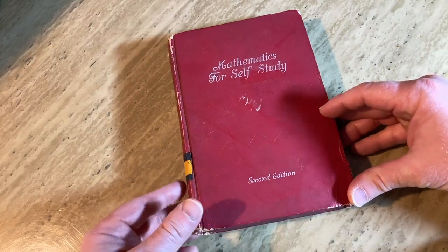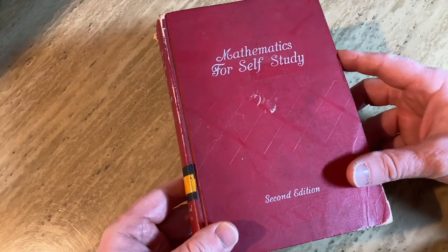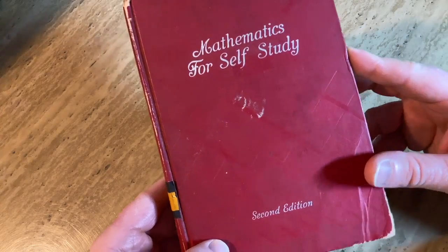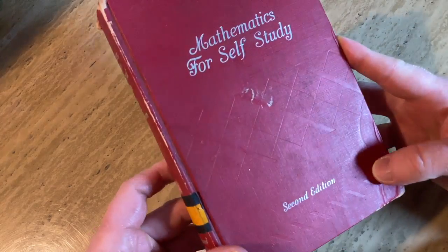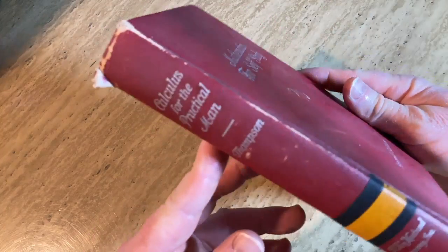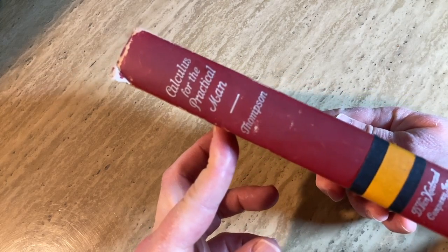Alright, in this video we are going to look at a very interesting book, Mathematics for Self-Study, second edition, and the book is called Calculus for the Practical Man, it's by Thompson.